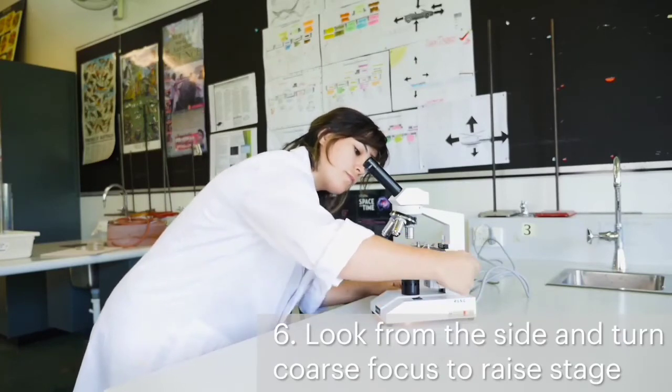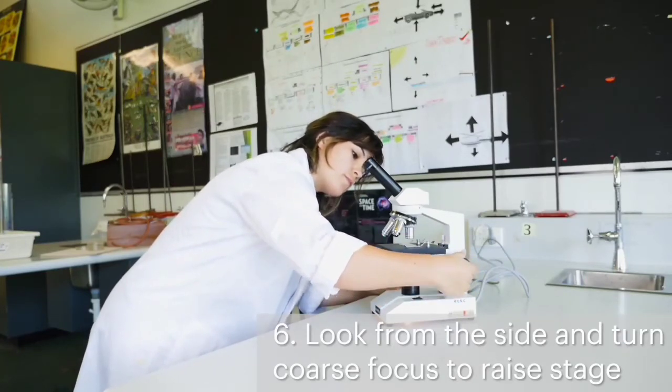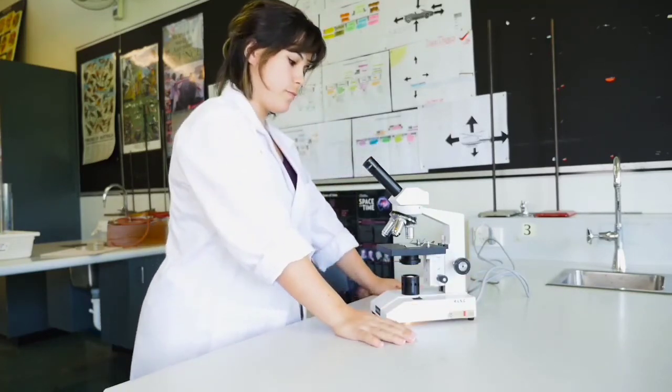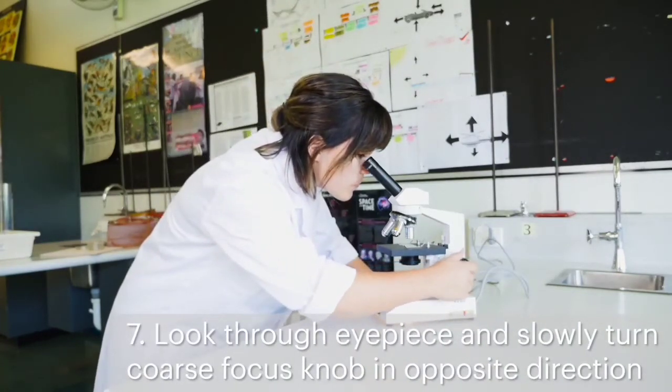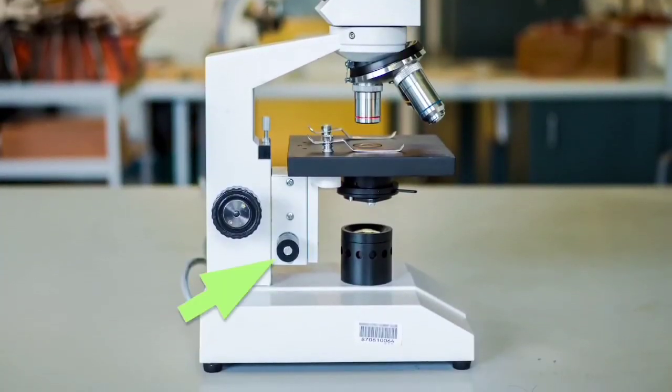Look from the side while you turn the larger coarse focus knob to move the stage up to its highest position, close to but not touching the objective lens. It's important to look from the side so you don't risk smashing the slide or the objective lens by going too far. Now you can look through the eyepiece and slowly turn the coarse focus knob in the opposite direction to focus on the specimen. If you turn the knob too quickly, you might miss the moment when the specimen is in focus. Once the specimen is roughly in focus, you can use the smaller fine focus knob to get a sharp image.